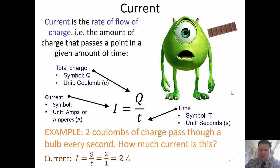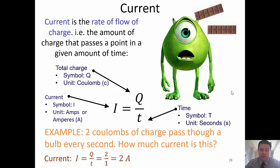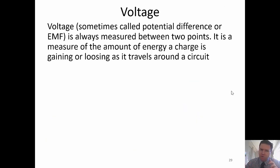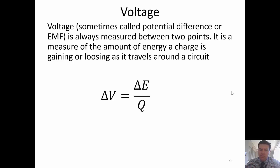Now we're going to talk about Mike having chocolate bars. Those chocolate bars are going to represent joules of energy. We're looking at this idea of voltage — sometimes called potential difference or EMF, electromotive force. It's always measured between two points, and it's a measure of how much energy a charge is gaining or losing as it travels around the circuit.